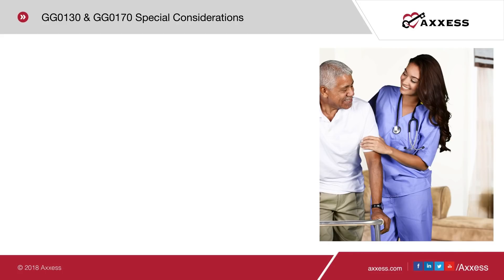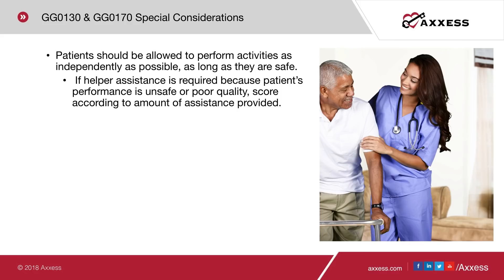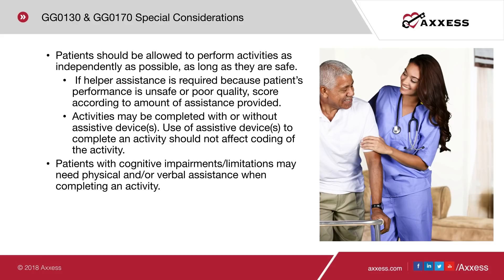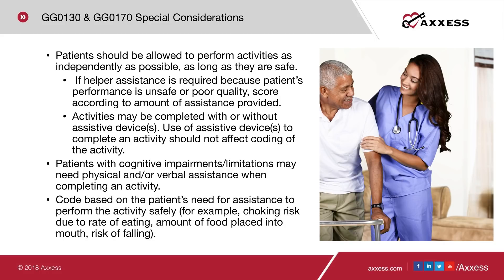Patients should be allowed to perform activities as independently as possible, as long as they are safe. If helper assistance is required because the patient's performance is unsafe or poor quality, score according to the amount of assistance provided. Activities may be completed with or without assistive devices; use of assistive devices should not affect coding. Patients with cognitive impairments may need physical and/or verbal assistance — code based on the patient's need for assistance to perform the activity safely.